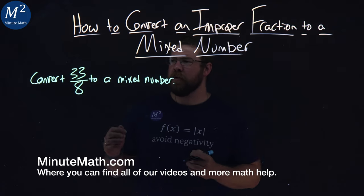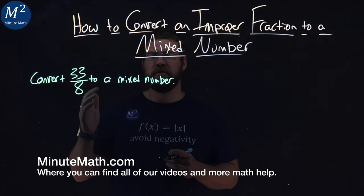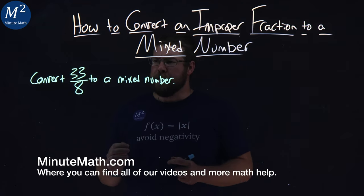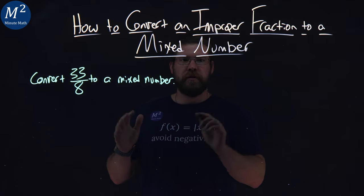We're given this problem here, convert 33 over 8 to a mixed number. Well, to do this, I'm going to set this up as long division.